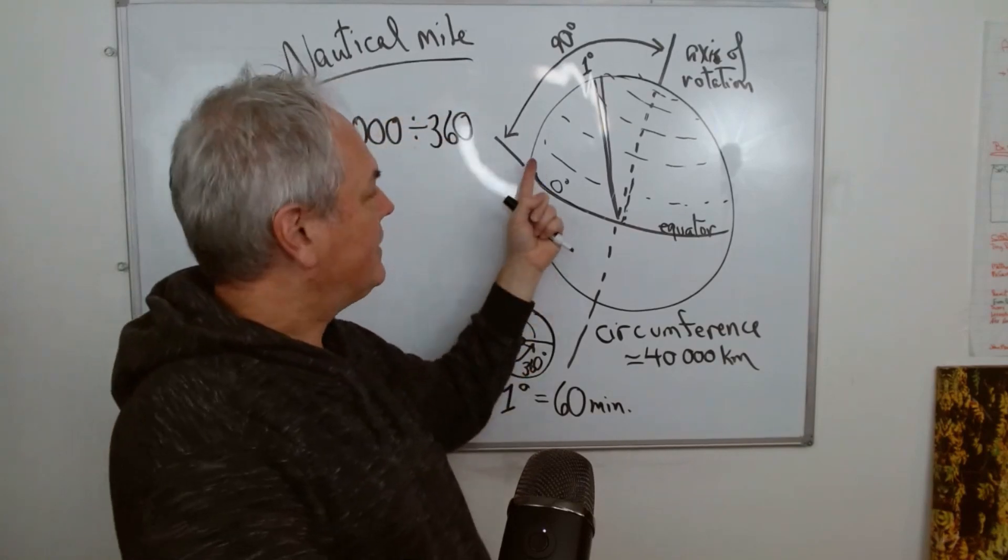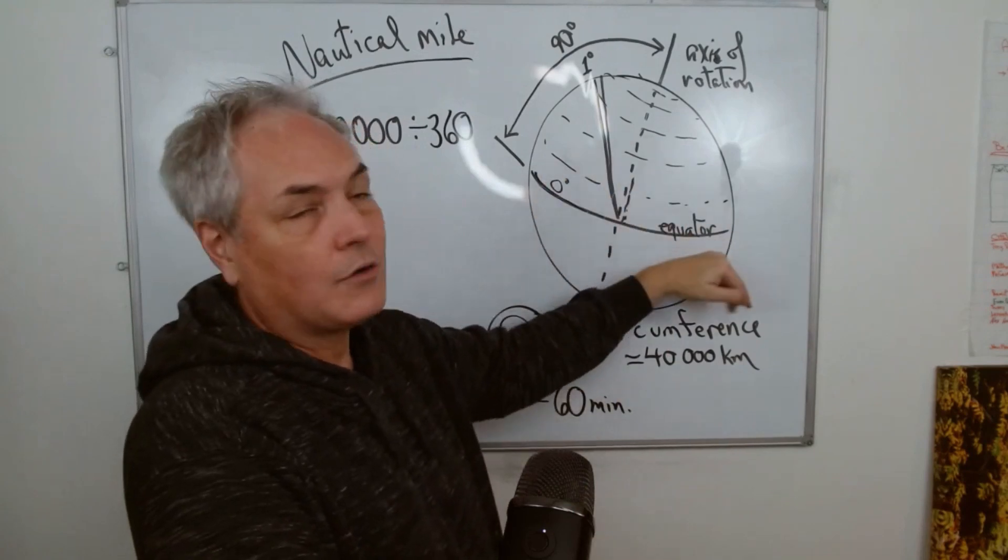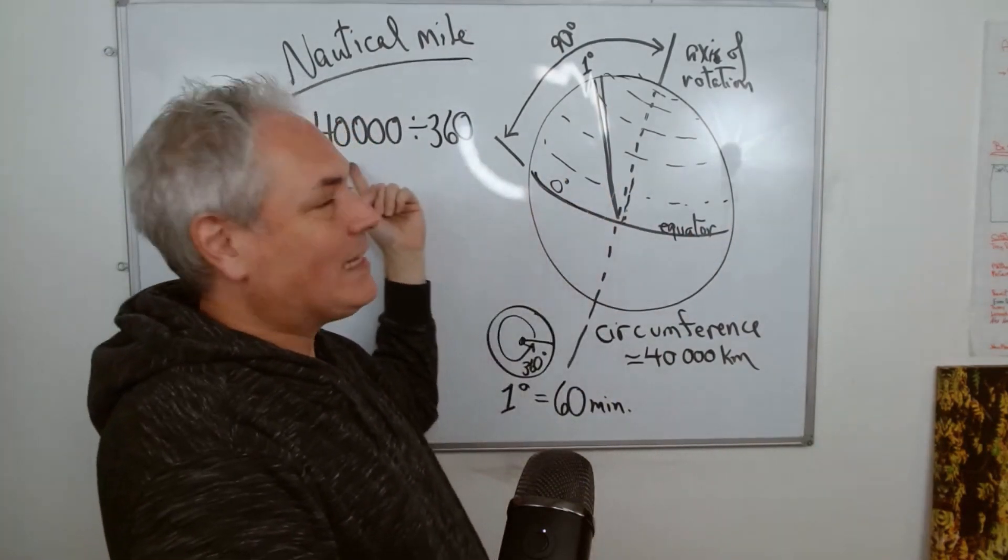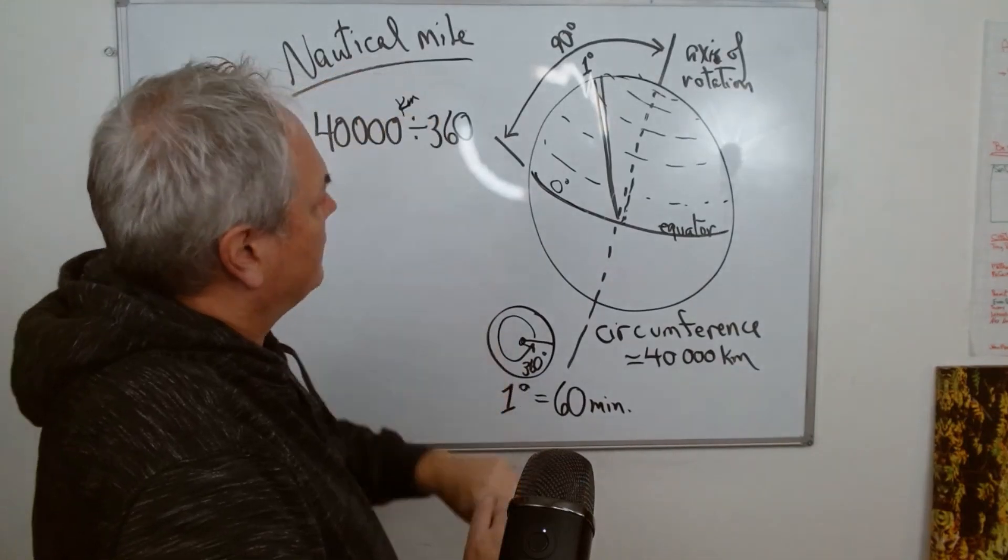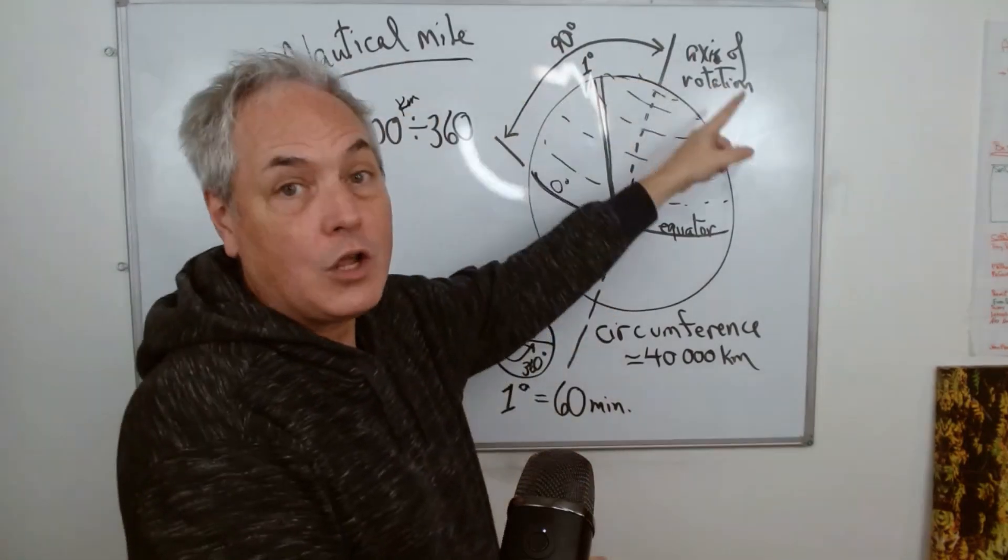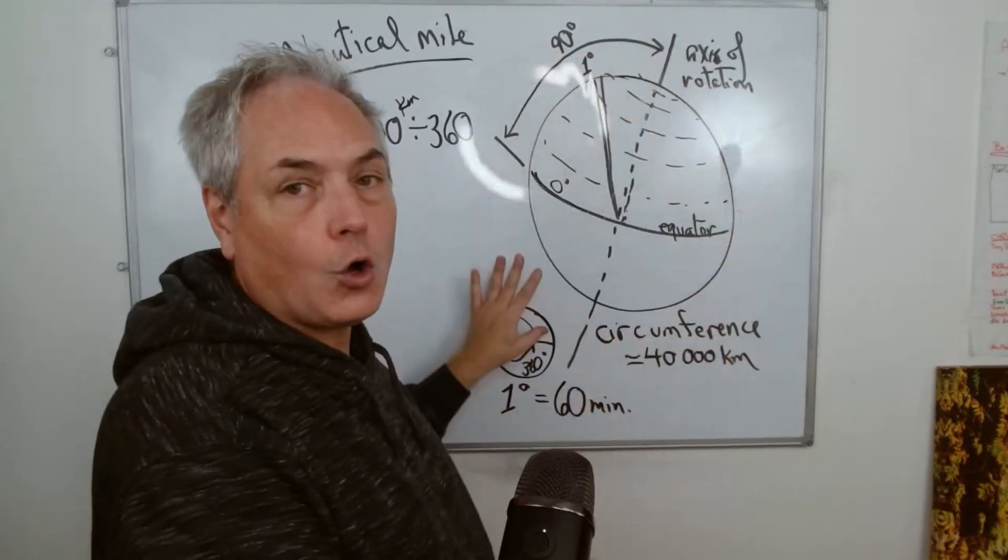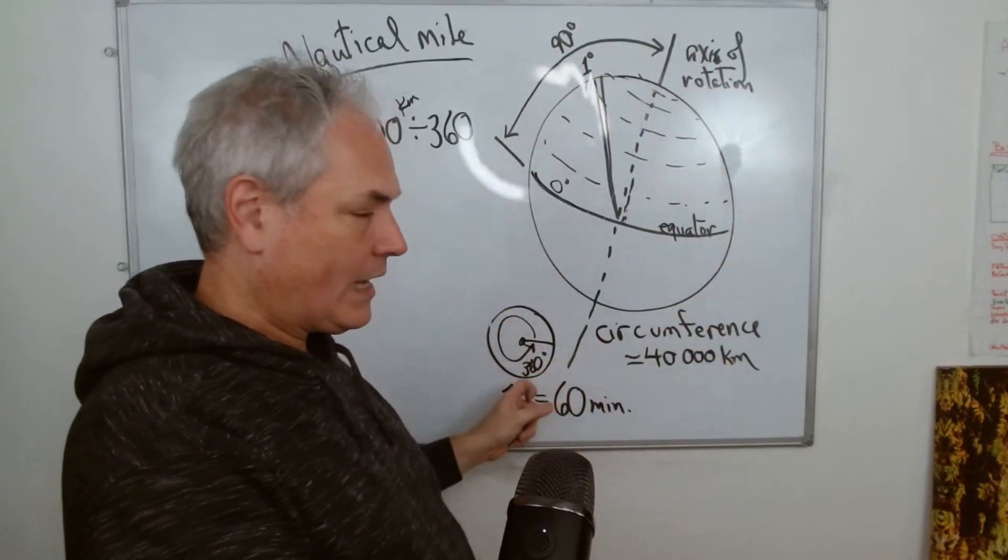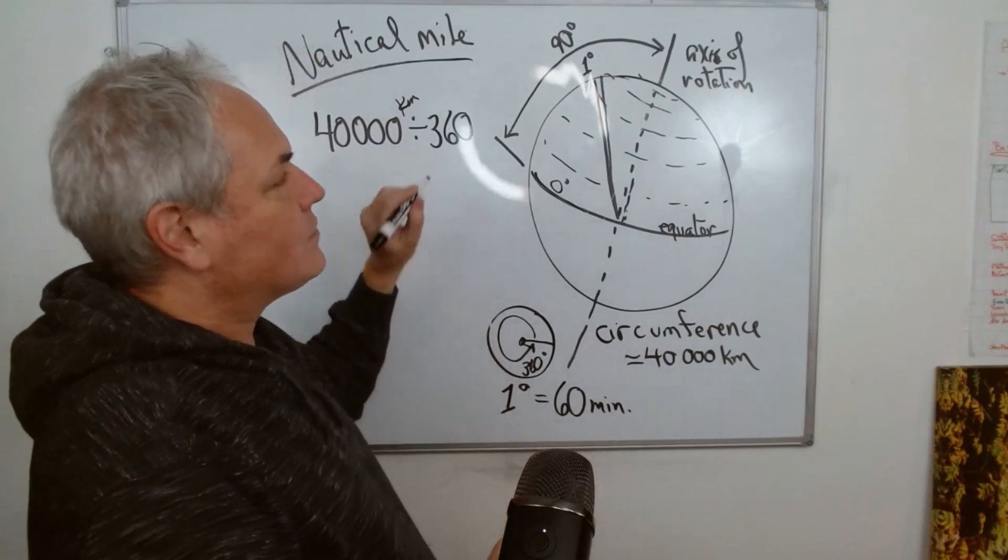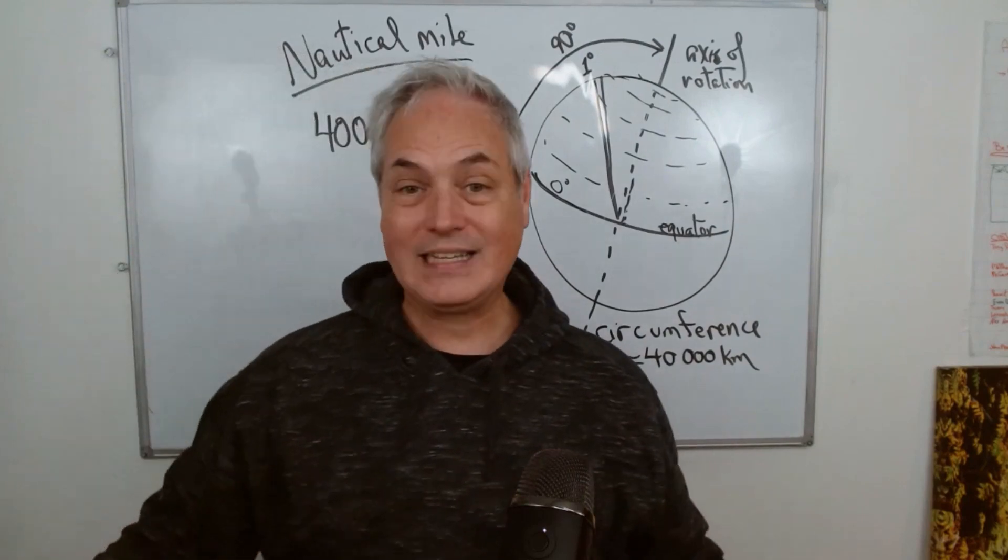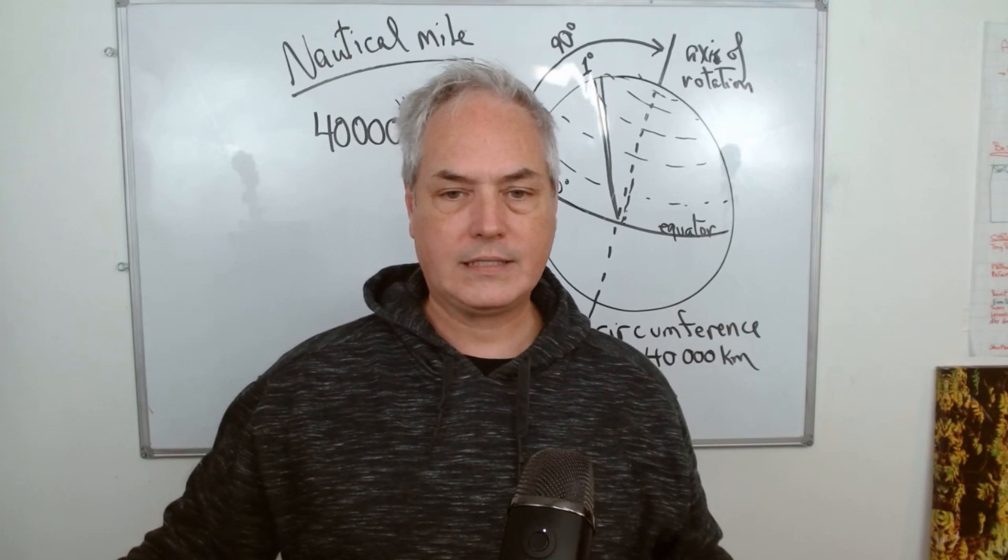The first thing we need to do is take the circumference of our planet, and it is 40,000 kilometers. We know that there's 360 degrees to cover the whole surface of the sphere. So 40,000 kilometers divided by 360...